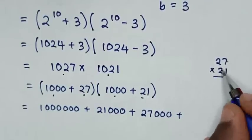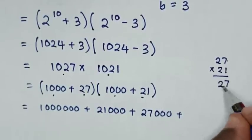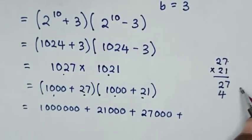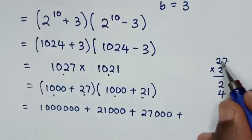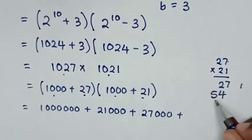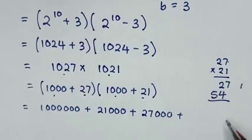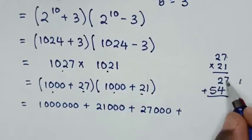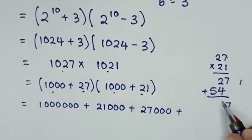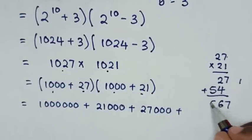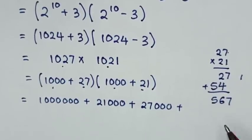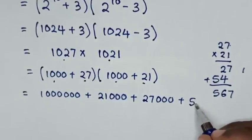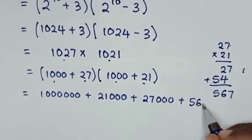So: 7 times 1 is 7, 7 times 2 is 14 — write 4 carry 1. Then 2 times 1 is 2 plus 1 is 3, and 2 times 2 is 4. Wait — the sum gives digits 7, 6, 5. So it will be plus 567.